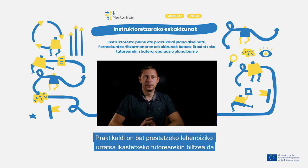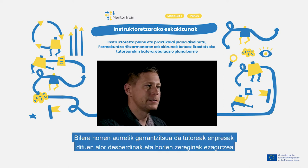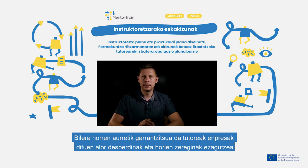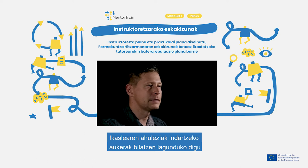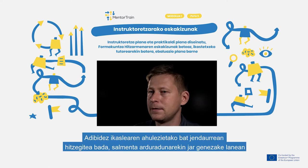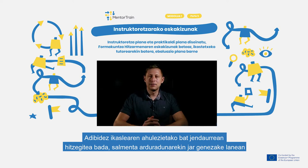The first step for designing a perfect mentoring and apprenticeship plan is meeting with the mentor. Before that meeting it's important that the apprentice already has knowledge about different departments and their tasks in the company. It helps to find possibilities where we can develop the weaknesses of the apprentice into strengths. For example, when one weakness of the apprentice is presentations, then the apprentice could work together with sales engineers.